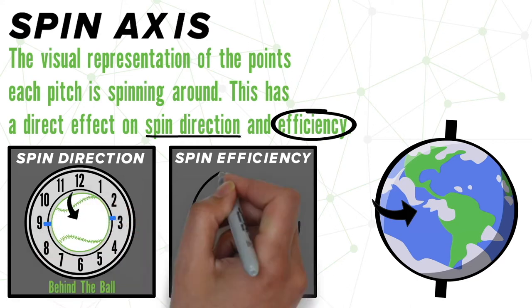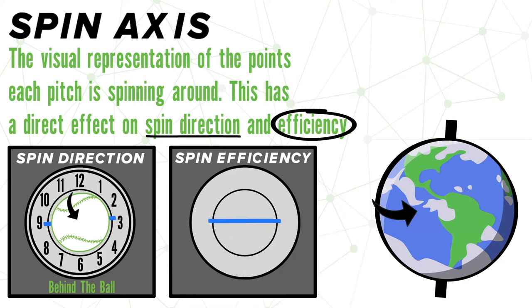Hopping over to spin efficiency, you can picture the ball instead from directly above. When you throw through the ball with true backspin, our spin efficiency will be 100%.